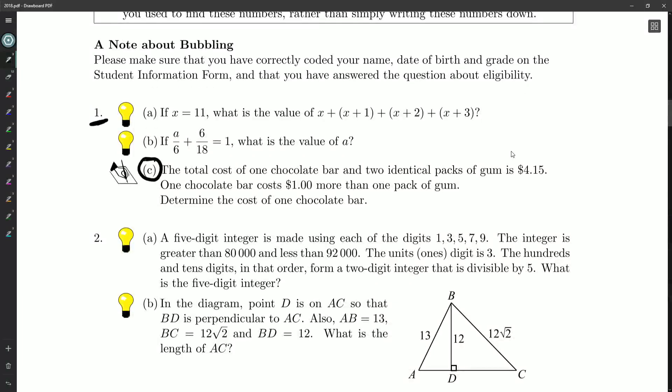We've got two light bulb questions where we just need the final answers, and then 1c is a written solution question where we've got to show our work. So 1a: if x is equal to 11, what is the value of x + (x+1) + (x+2) + (x+3)?